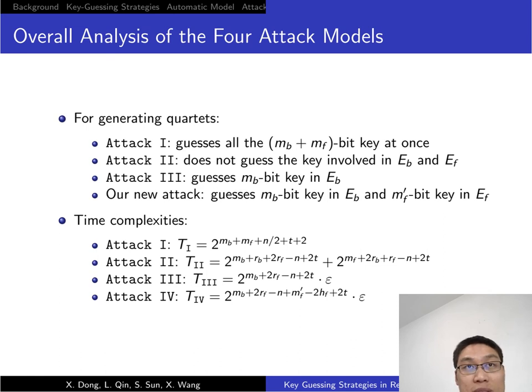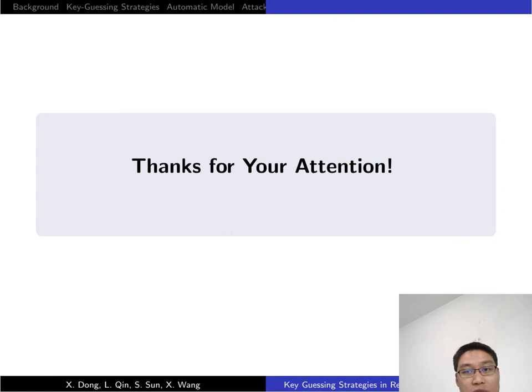We compared those key recovery models as follows. Before we generate quartets, in attack 1, we guess MB and MF bit key at once. In attack 2, we do not guess any key. In attack 3, we guess only MB in EB. In our model, we guess MB and partial key. So, thanks for your attention.